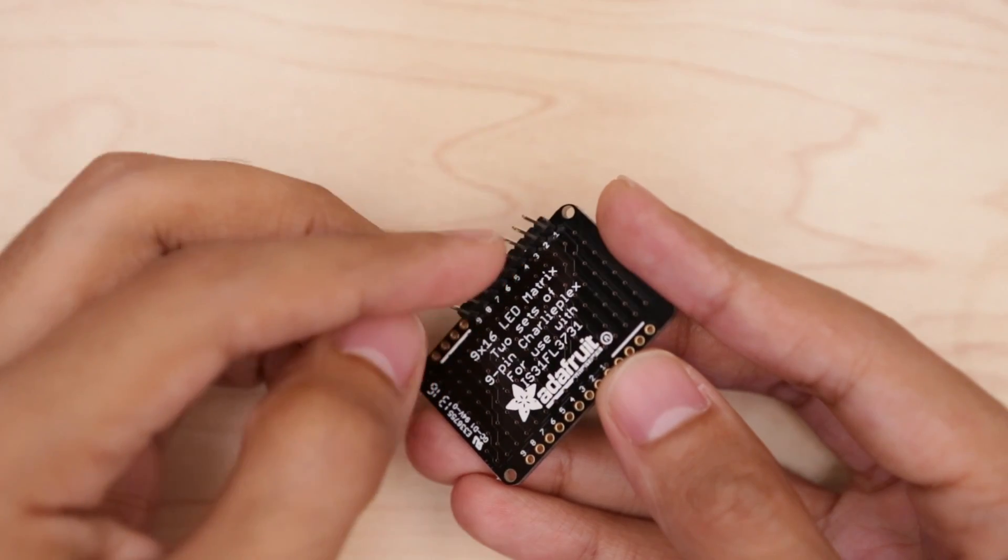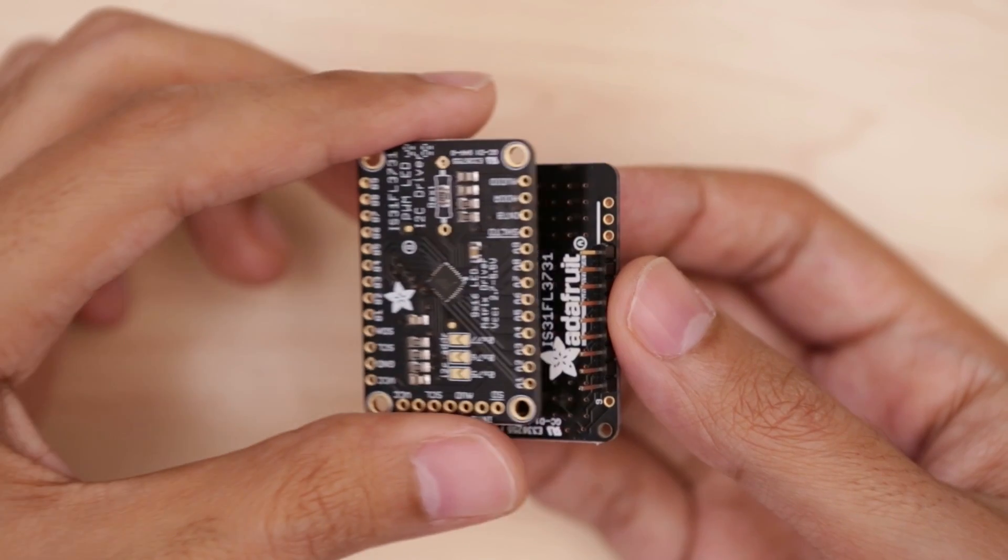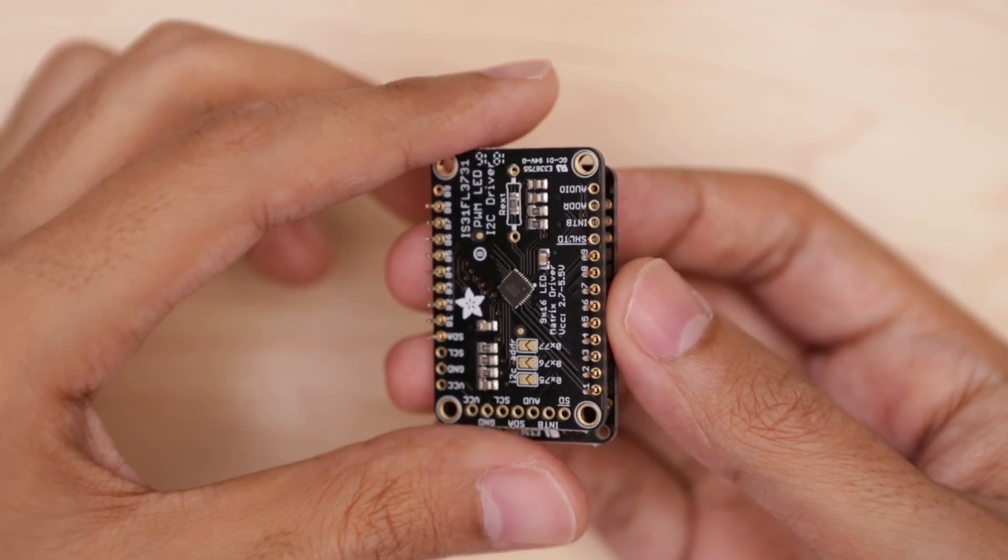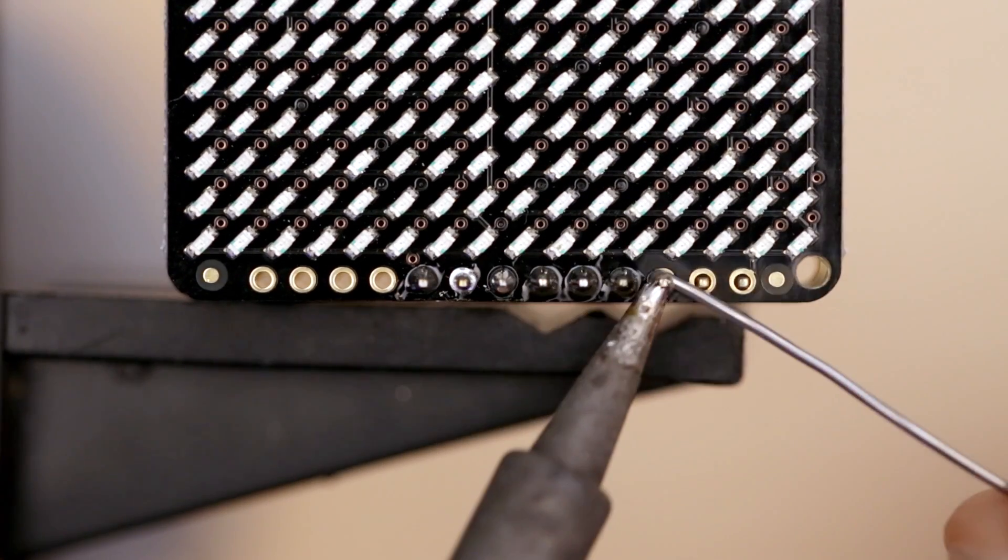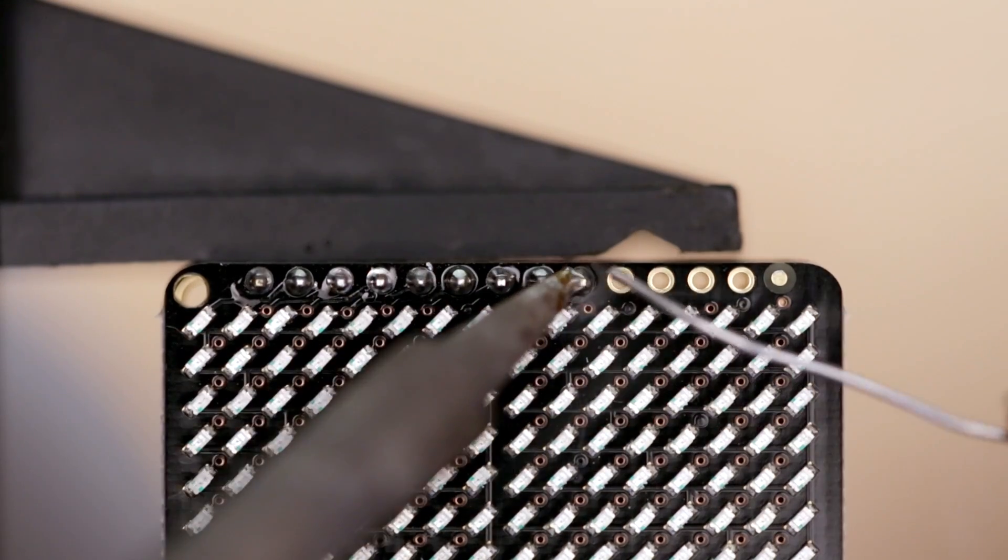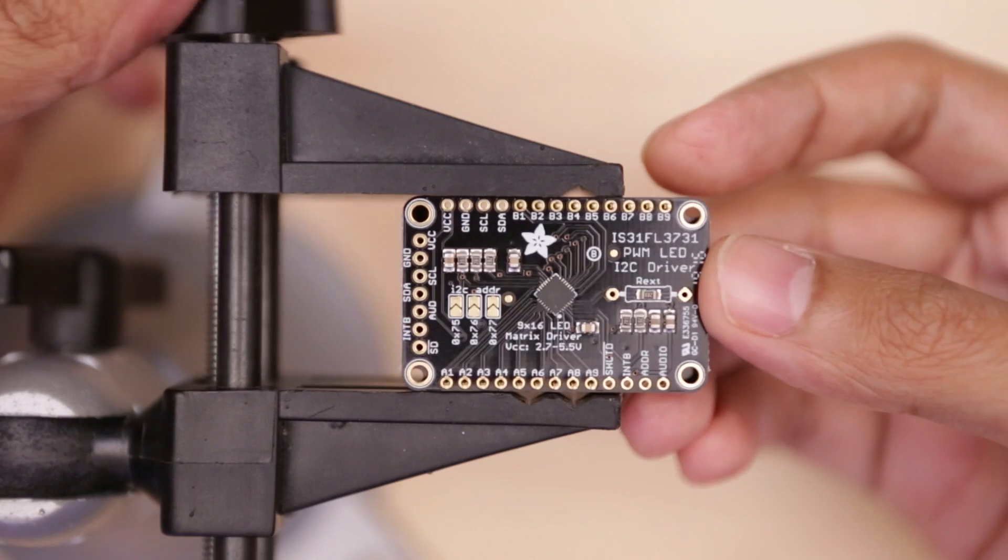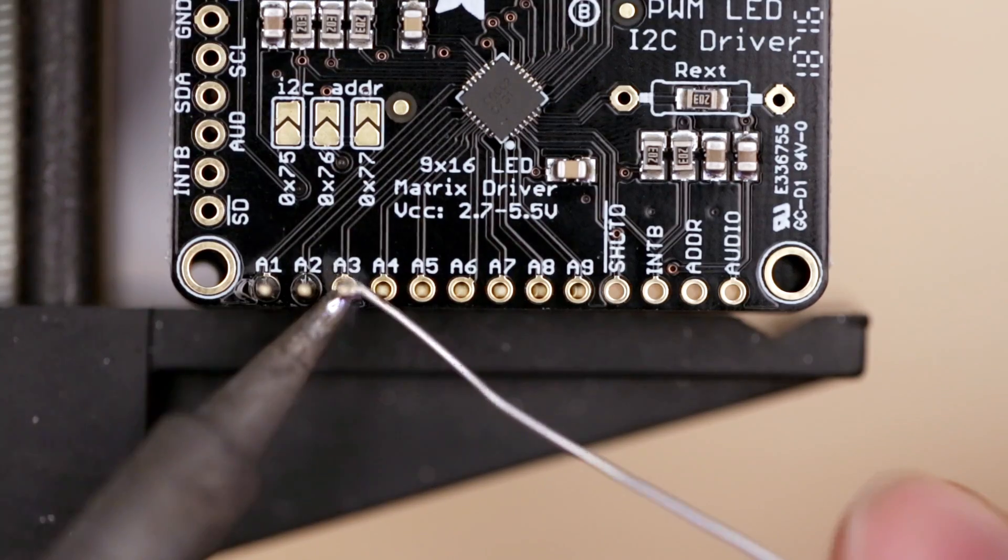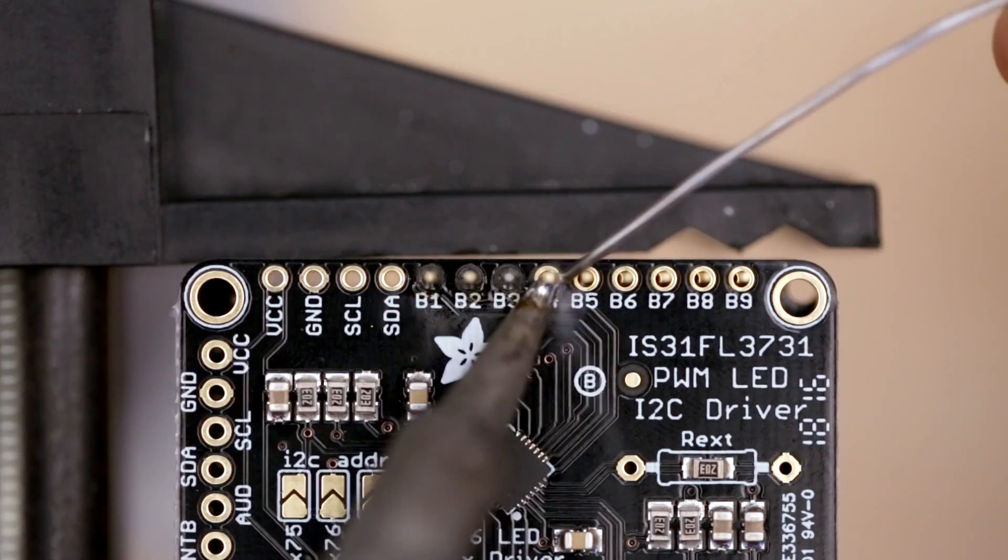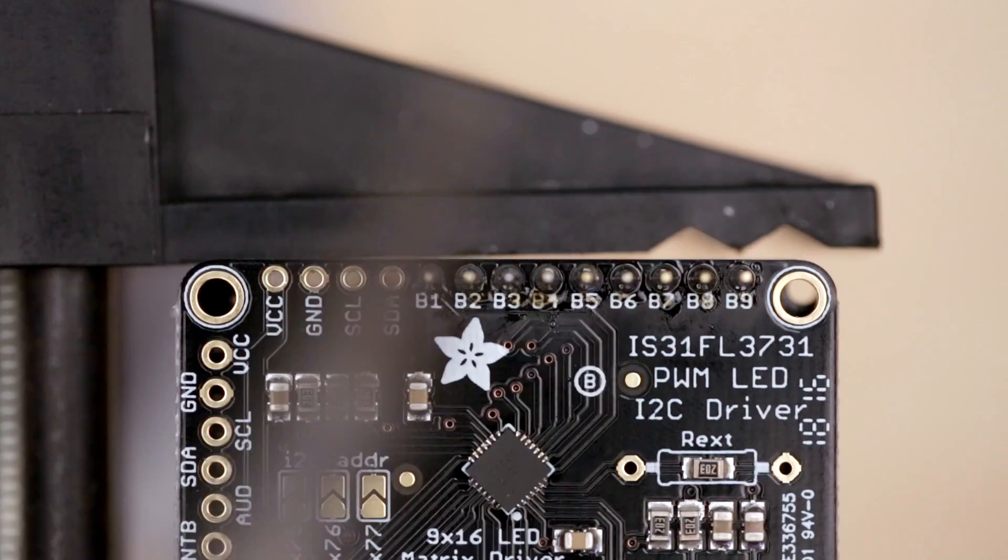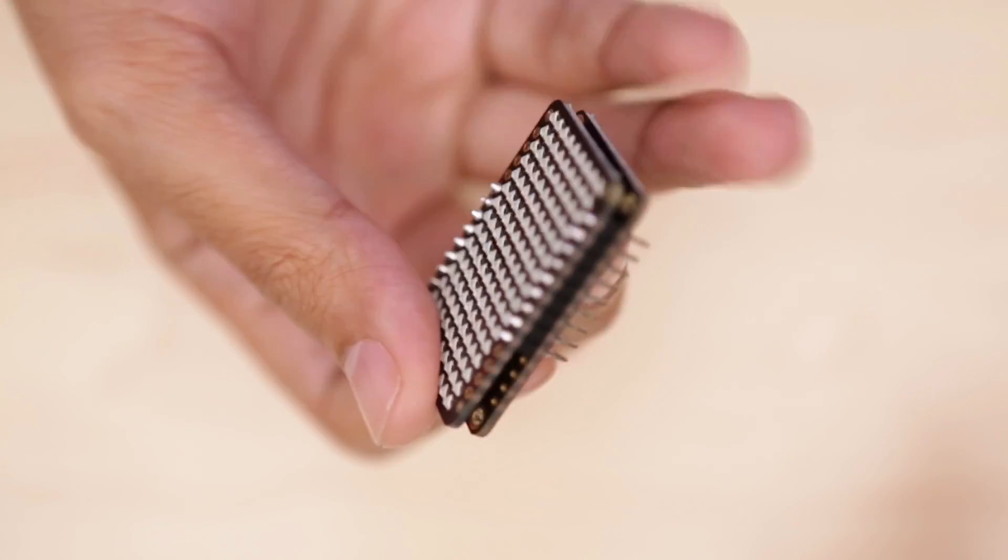We'll start by installing two headers into the pins on the LED matrix. Then install the LED driver on top. We'll need to solder the headers to make a solid connection. Once we finish this side we'll flip it over and solder the header pins to the LED driver. And now we have our little LED matrix package.